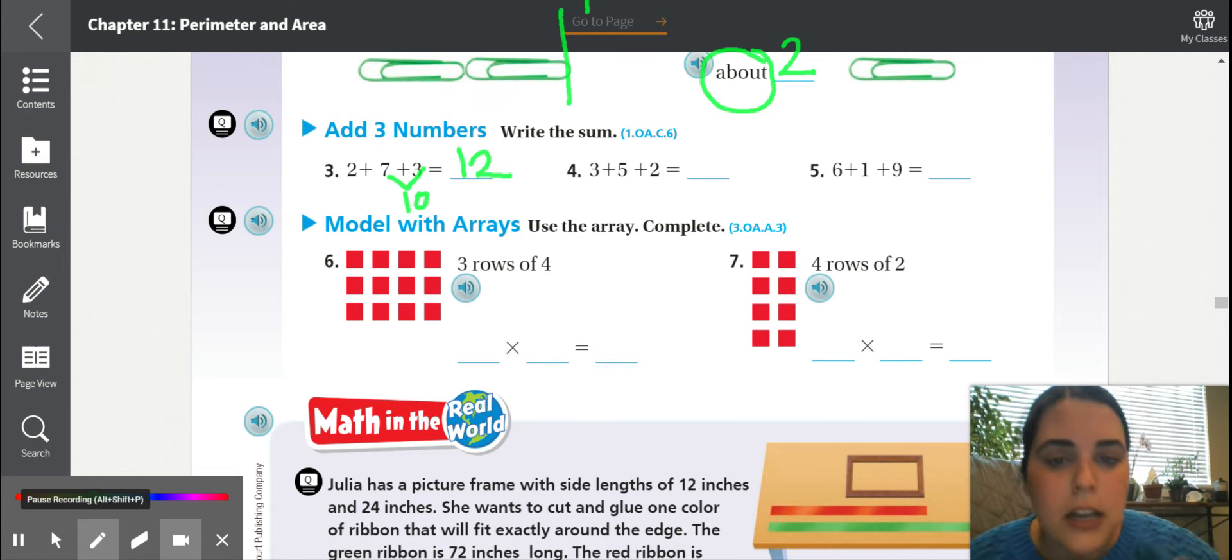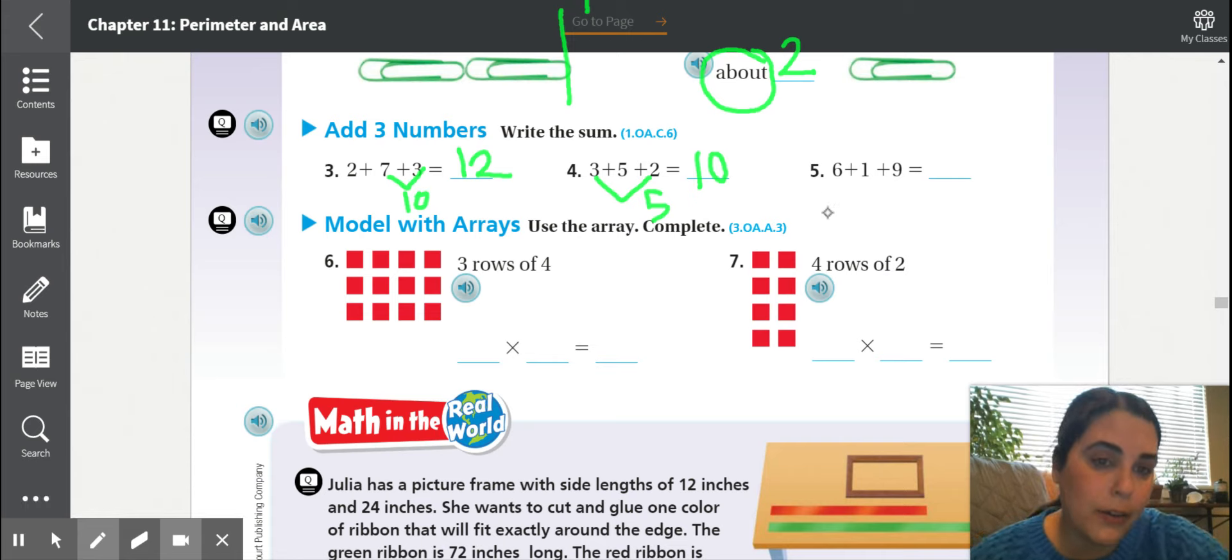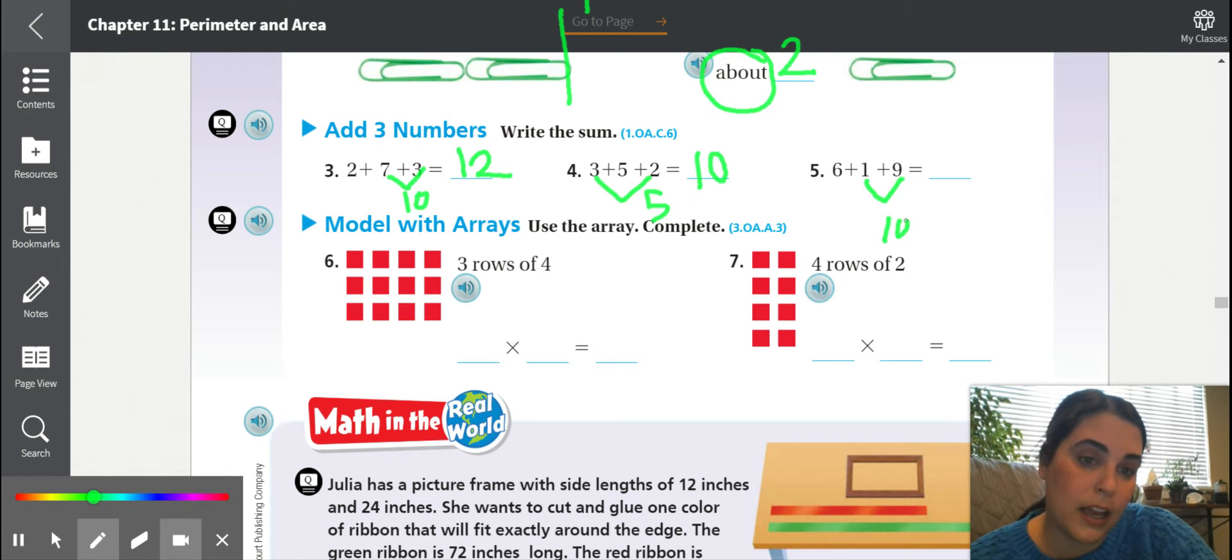All right, let's correct. We have three plus five plus two. Well, I know that three plus two equals five, and then we can easily add five plus five, which is 10. Number five, how can we make a 10 here? Well, one plus nine is 10, and then 10 plus five is 15.